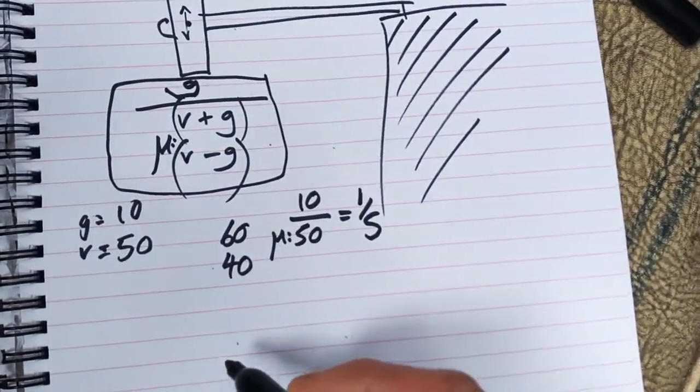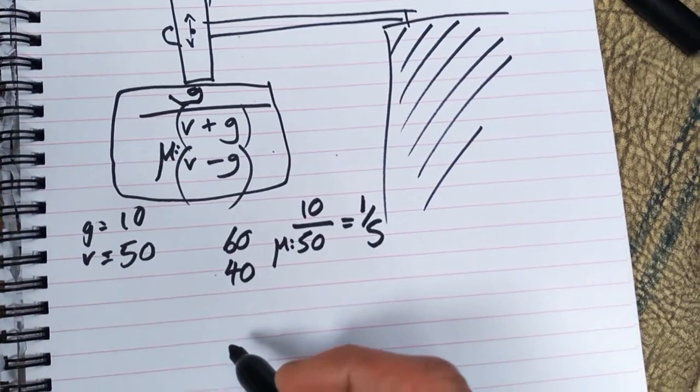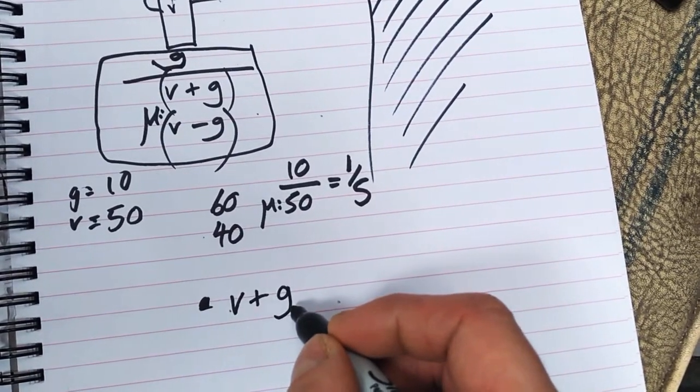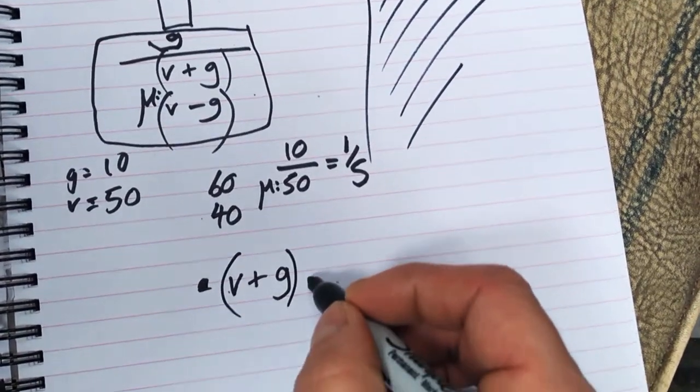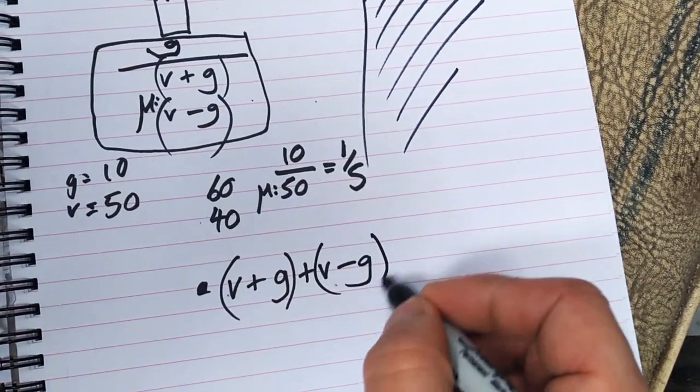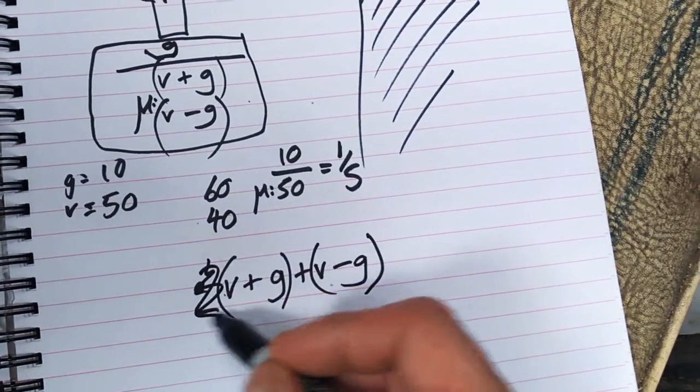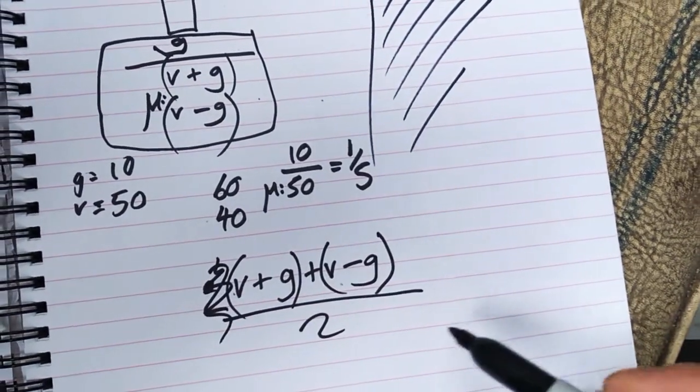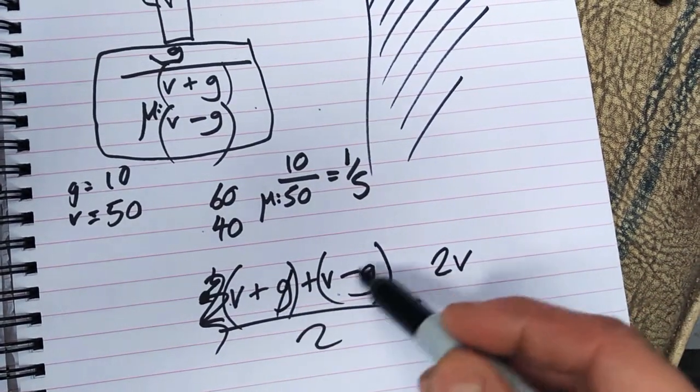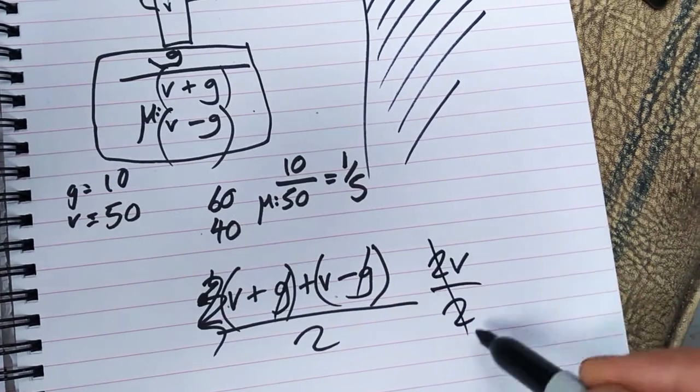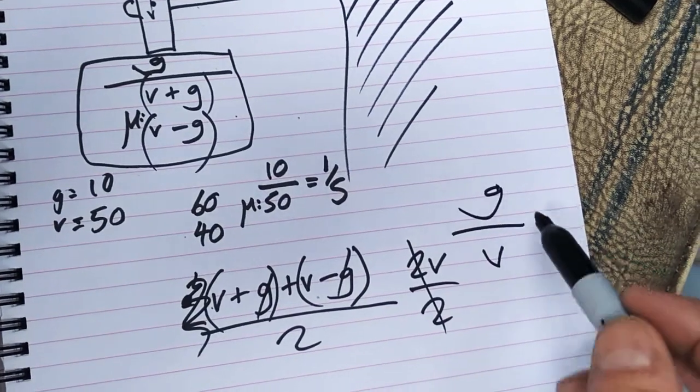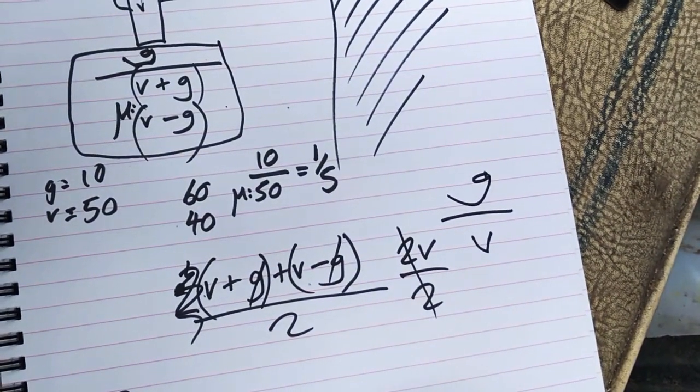The average of velocity plus gravity and velocity minus gravity is those two added together divided by two. If we do that, we get 2v and the g's cancel each other out over 2. They cancel each other out, we just get v. Put that over g and our final equation is g over v. Gravity divided by velocity equals the proportion of gravity's effect.